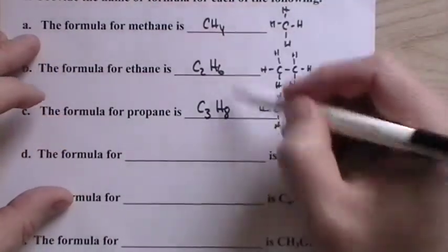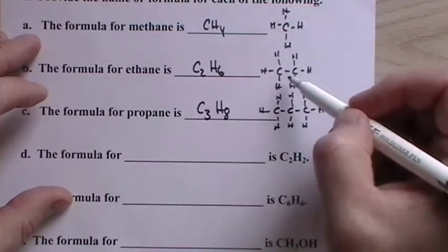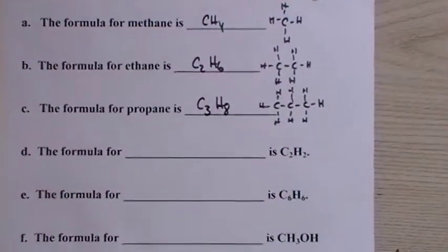So we have the first three hydrocarbons: one carbon, two carbons, and three carbons. You should know their formulas and names.